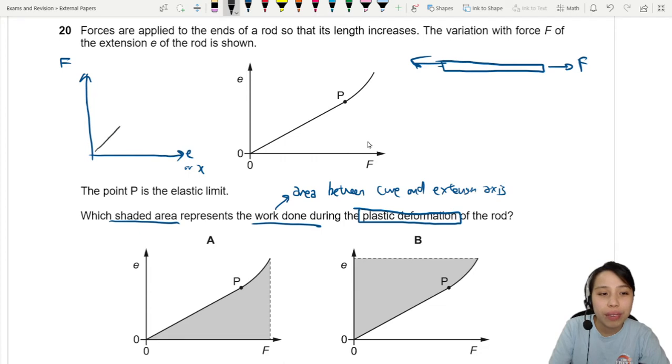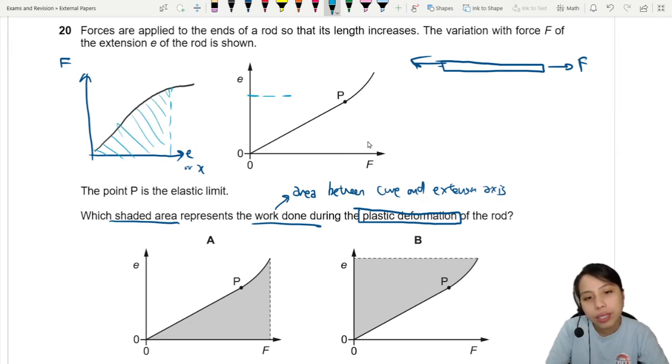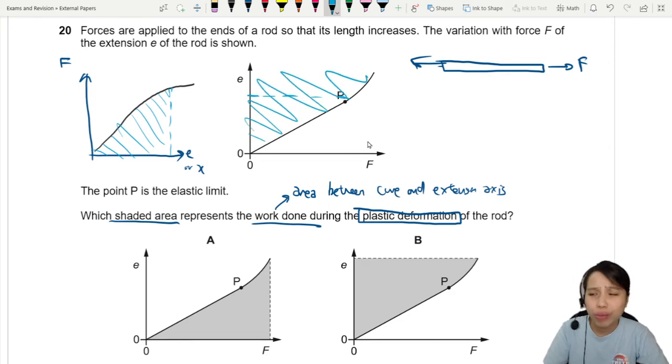So normally, if your graph is like this, you want to find work done? It's like this. But in our case, since we have rotated, it's gonna be on this side already, whatever area you want to find. So you need to know this fact.